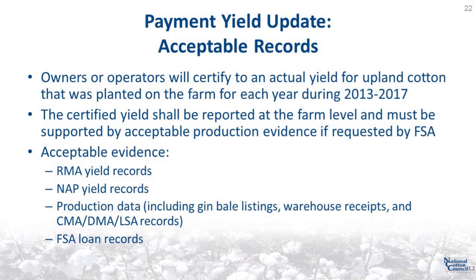For the payment yield update, owners and operators will certify to an actual yield for upland cotton that was planted on the farm for each year during 2013 to 2017. The certified yield will be reported at the farm level and must be supported by acceptable production evidence if requested by the Farm Service Agency. Acceptable evidence includes RMA yield records, NAP yield records, production data such as gin bell listings, warehouse receipts, CMA, DMA, LSA records, and FSA loan records. While RMA records are generally a good source of yield data, keep in mind that quality losses do lower production account and result in a lower yield.